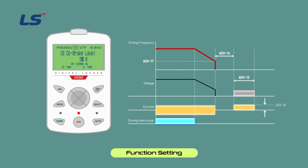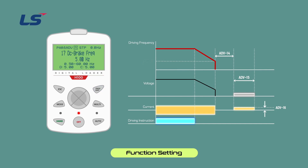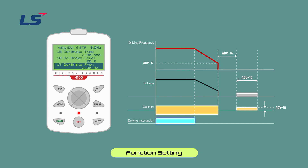When you press the Enter key in ADV16 DC brake level, a screen where you can set the DC braking amount will appear. Use the direction keys to set and press the Enter key to complete the setting. When you press the Enter key in ADV17 DC brake frequency, a screen where you can set the frequency will appear. Use the direction keys to set and press the Enter key to complete the setting. The DC braking start frequency can be set to 0 to 60 Hz depending on the equipment condition.